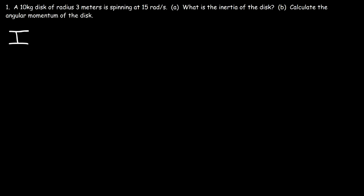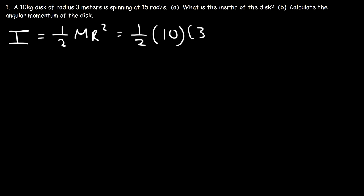To calculate the inertia of a disc, here's the equation that you need. It's 1/2 m r squared. So m is the mass of the disc and r is the radius. 3 squared is 9, and half of 10 is 5. So 5 times 9 is 45. So the inertia is 45 kilograms times m squared.